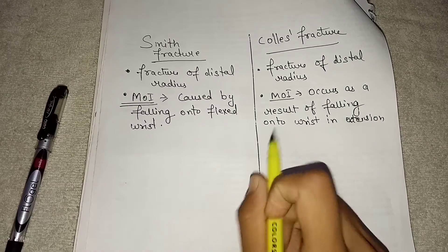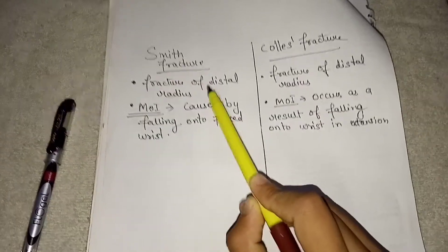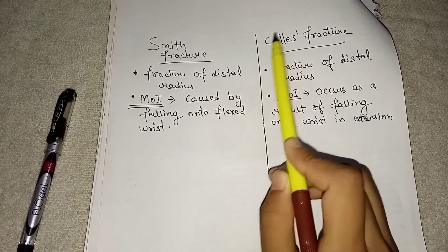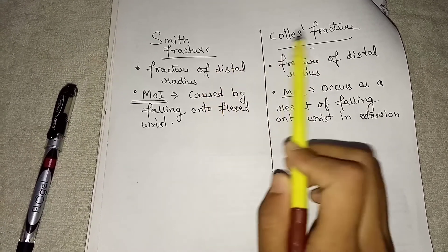Now next is Smith fracture and Colles fracture. We will discuss both of these fractures together. Both are the fracture of distal radius.